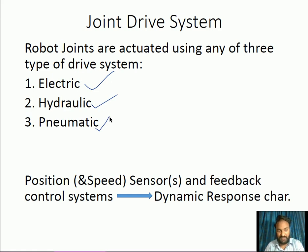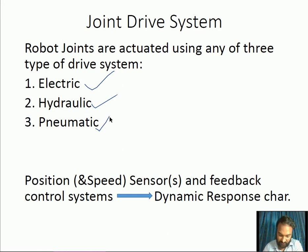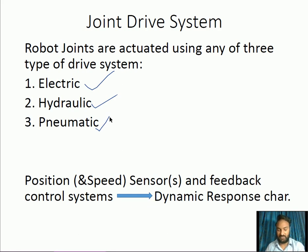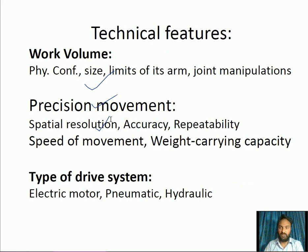The joint drive system is used for positioning as well as speed control. It is used with position sensors and speed sensors, and we also use a feedback control system for the dynamic response characteristics of the robot. Combinations of sensors — not just one — are required to move the end of the robotic arm to the desired location at the right speed.